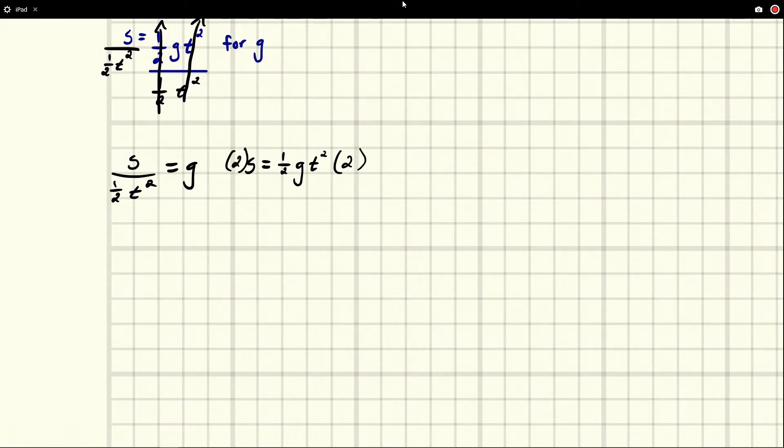And if you do this, when you multiply this side by two, the one half and the two simplify to one because this two simplifies with this two and we're left with one. So we get 2s equals g t squared.